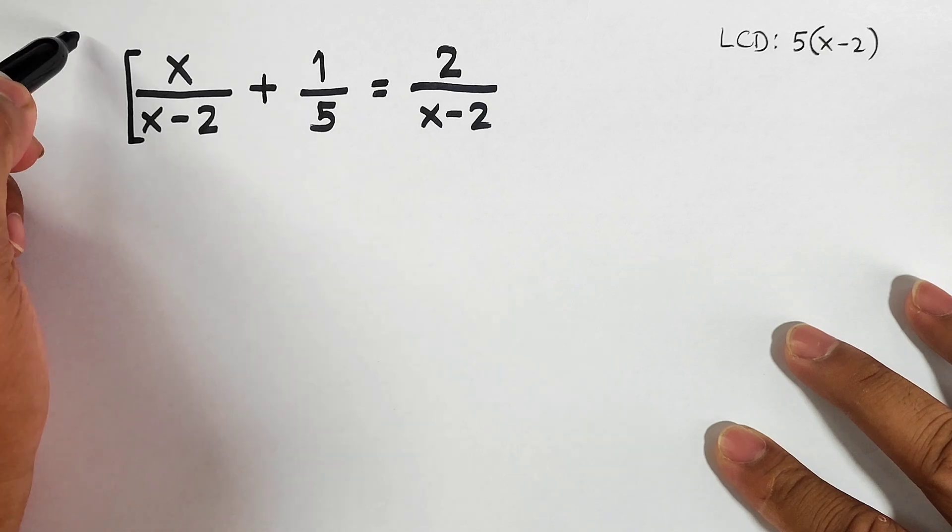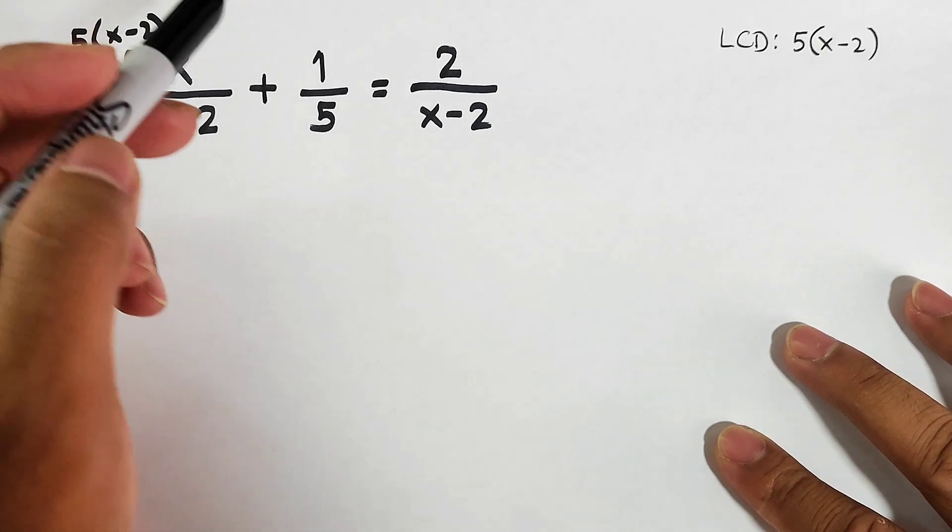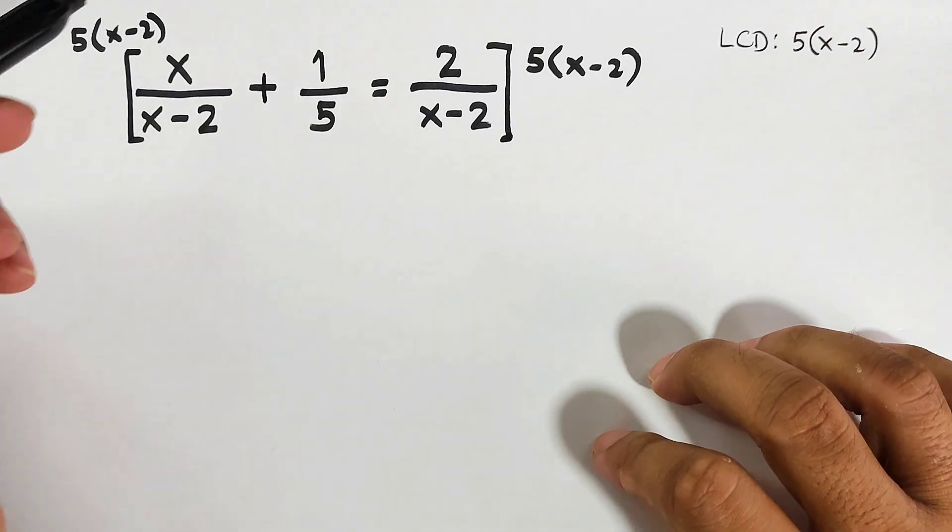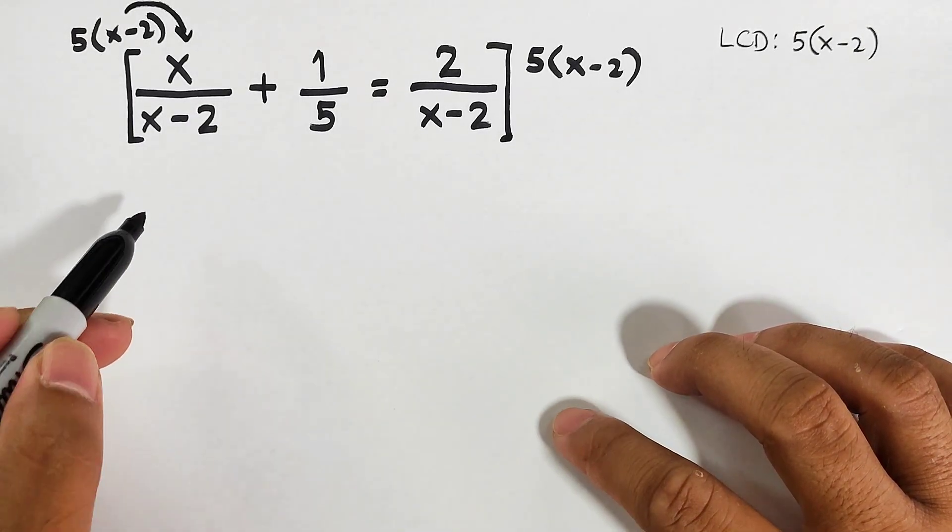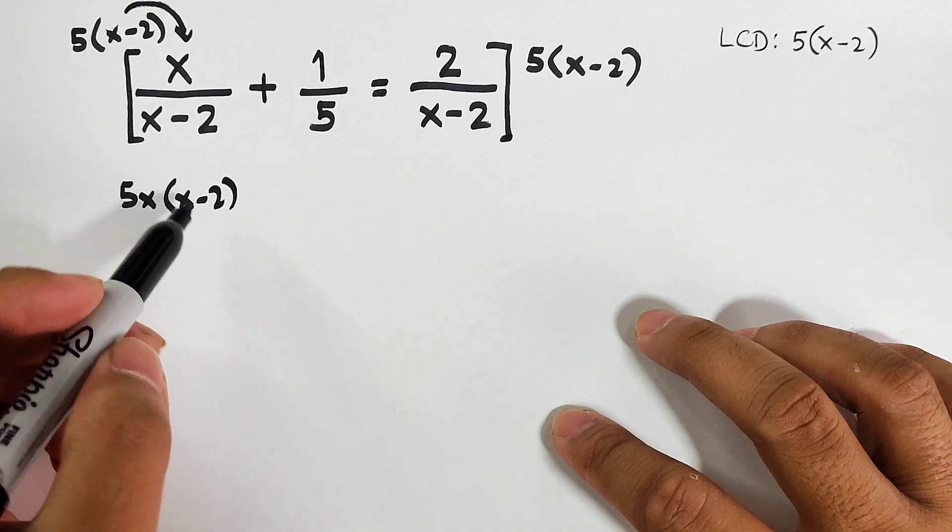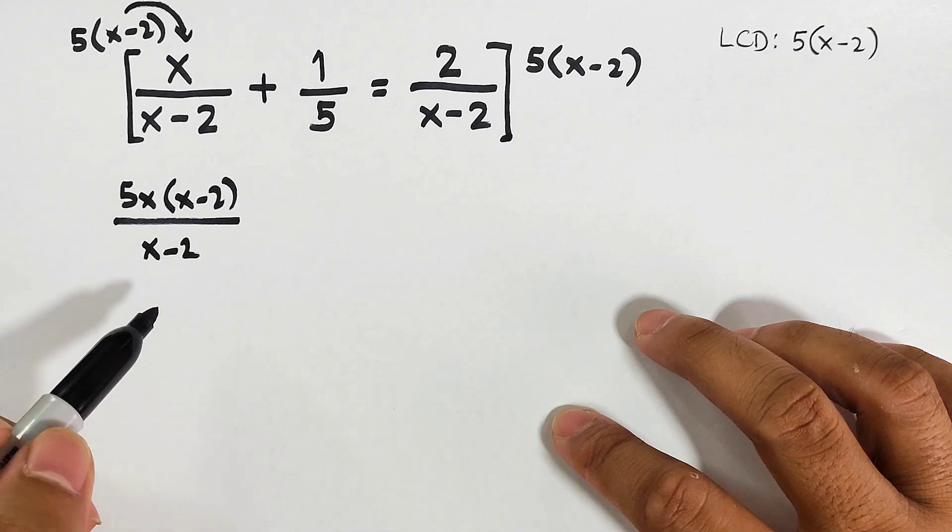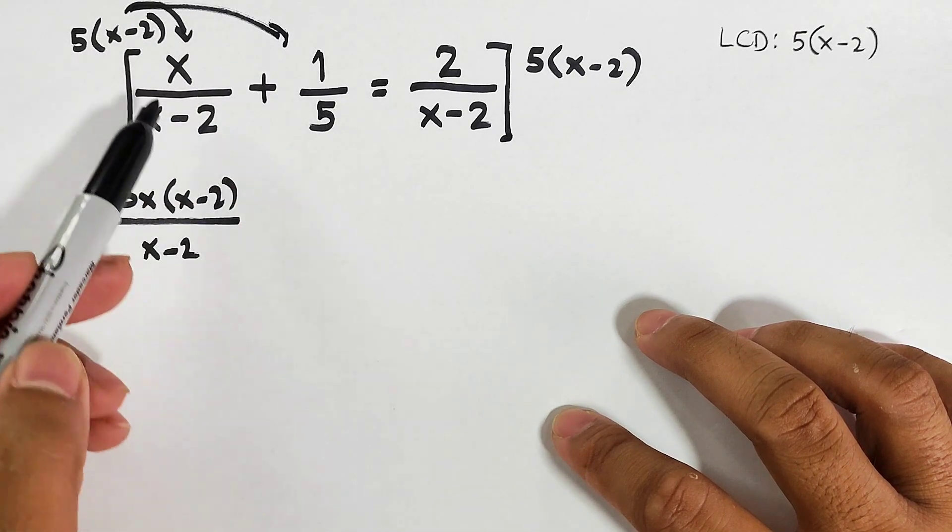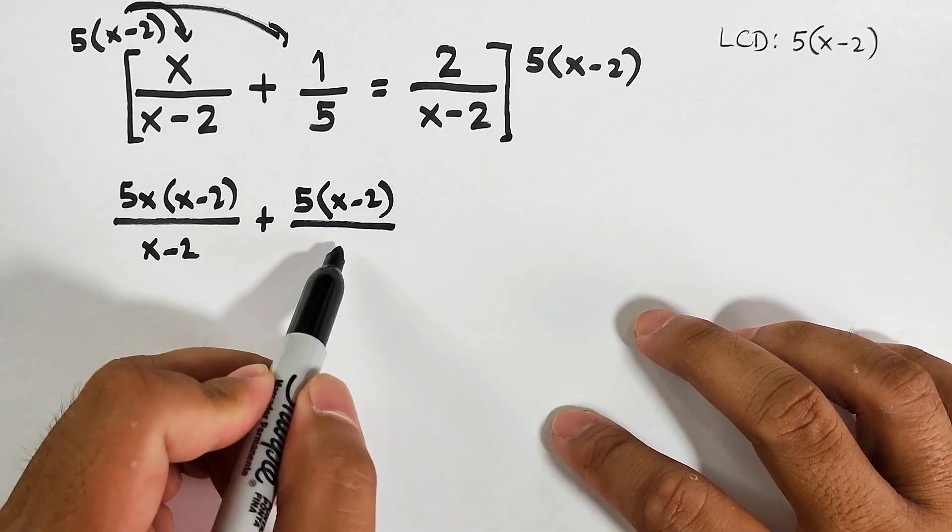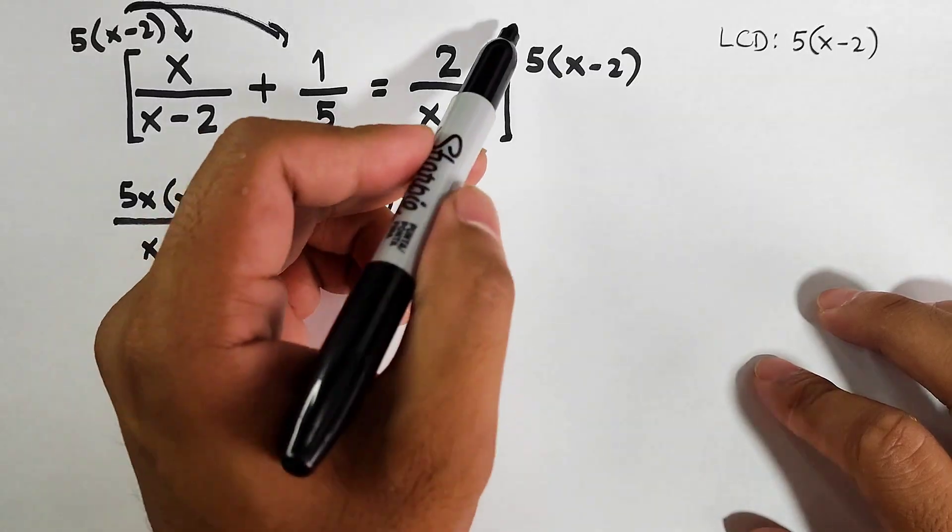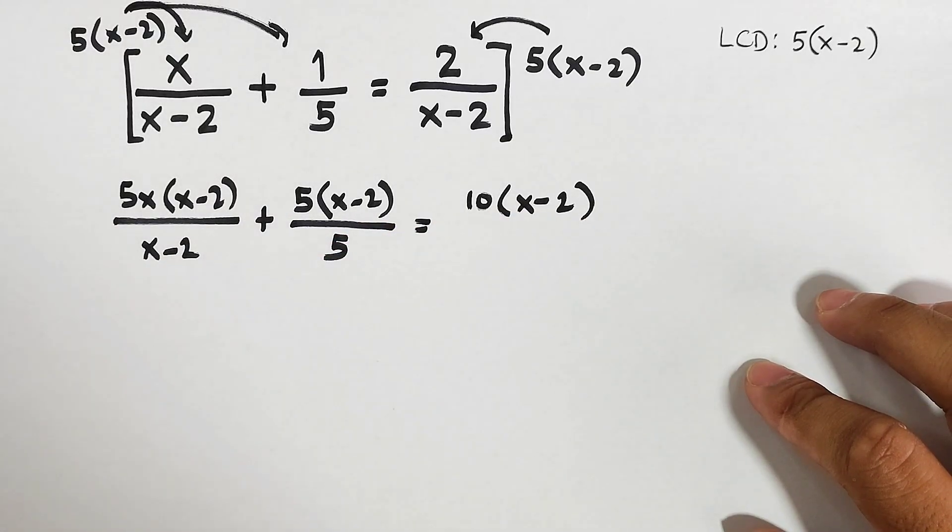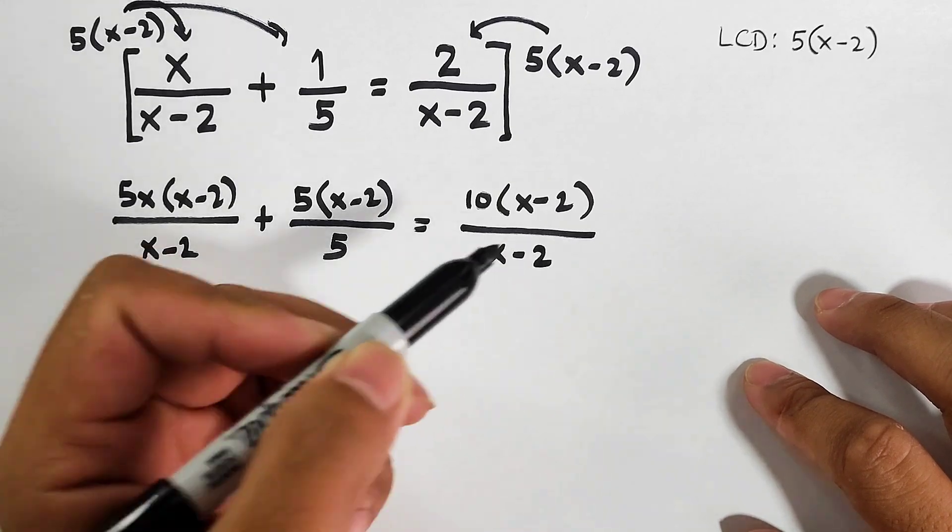Let's multiply this by 5 times x minus 2 on both sides. We will multiply this one by one. This becomes 5 times x is 5x, x minus 2 over x minus 2. Then plus 5 times x minus 2 over 5. On the other side, 5 times 2 equals 10, times x minus 2 over x minus 2.